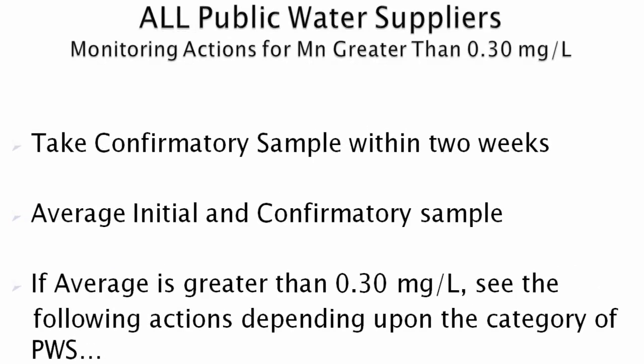The first step is to take a confirmatory sample within two weeks, and that's for all public water supplies. If the average is greater than 0.3, there are a series of actions to take. Here's an example: a public water supply exceeded 0.05 and went on quarterly monitoring. During that monitoring, in the second quarter they exceeded 0.3. They took a confirmatory sample and still exceeded 0.3. They continued on quarterly monitoring, reporting to MassDEP, and going into the other requirements such as public notice. The actions are going to vary depending on whether you're a TNC, NTNC, or community system.